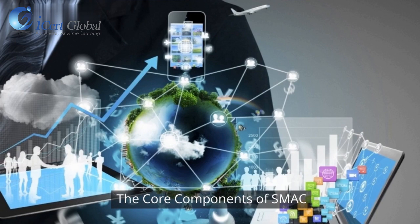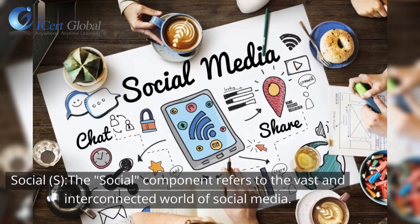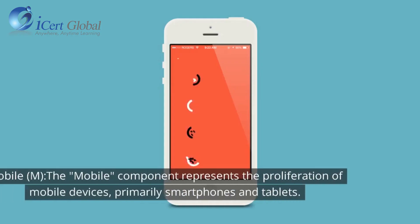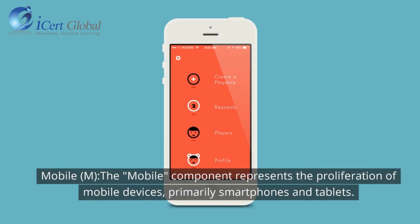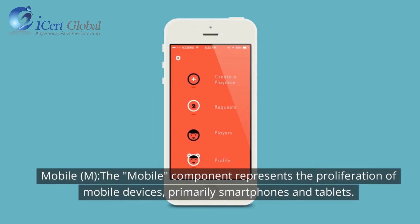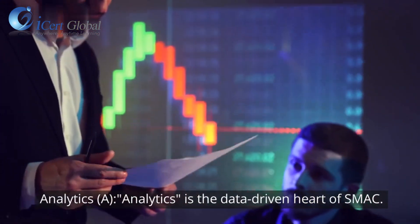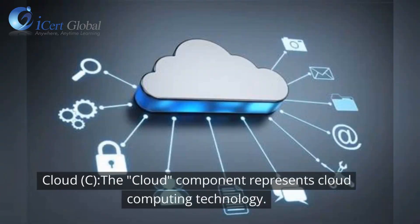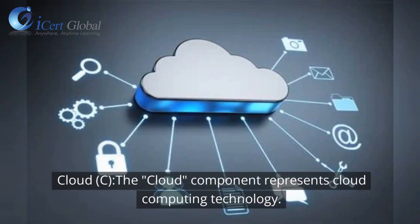The core components of SMAC. Social (S): the social component refers to the vast and interconnected world of social media. Mobile (M): the mobile component represents the proliferation of mobile devices, primarily smartphones and tablets. Analytics (A): analytics is the data-driven heart of SMAC. Cloud (C): the cloud component represents cloud computing technology.